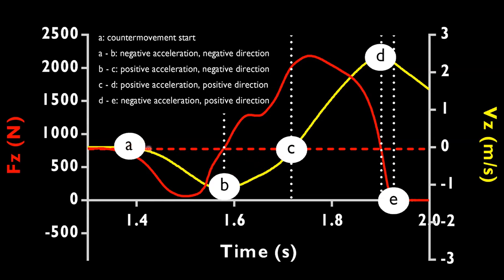We can use this to deconstruct that force-time curve. You can see that point a is essentially where the jump starts. Between points a and b, we've got a negative acceleration, and we know it's a negative acceleration because the velocity is decreasing. We also know that the jumper is moving in a negative direction, and we know this because the velocity data here is below zero. Between b and c is essentially where the jumper starts to put on the brakes.